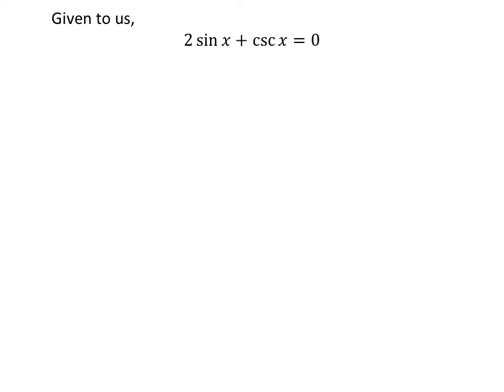Given to us, 2 sin x plus csc x equals 0.